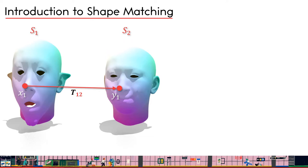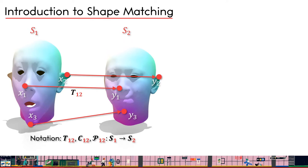We use color transfer to visualize the correspondences: if two vertices correspond to each other, we assign them the same color. We use the subscript to denote map directions — for example, T12 means a point-based map that maps shape S1 to shape S2.